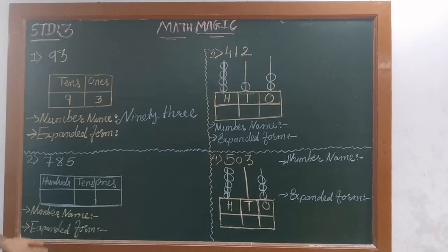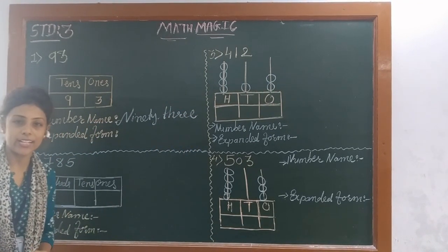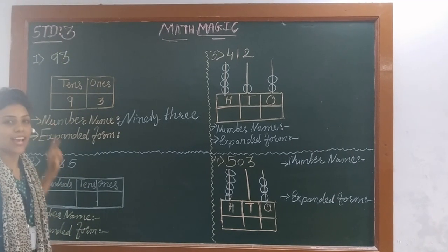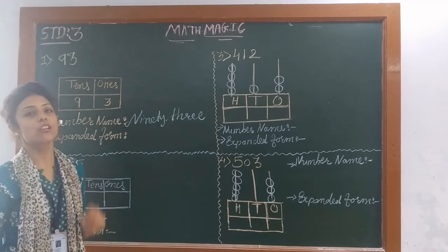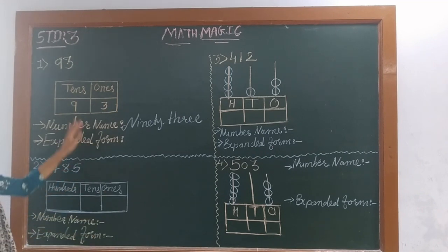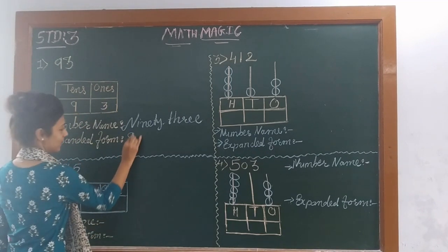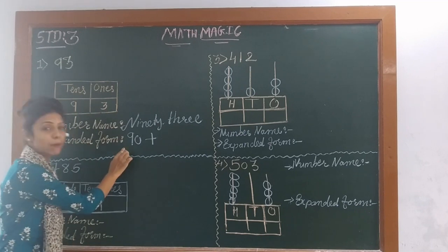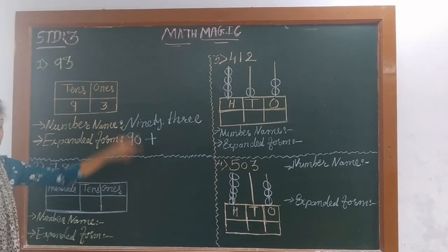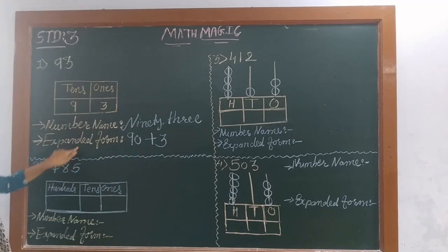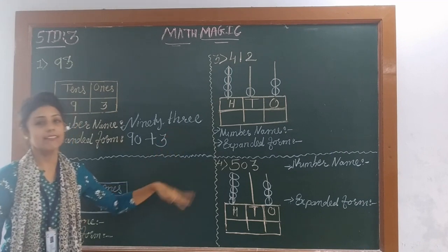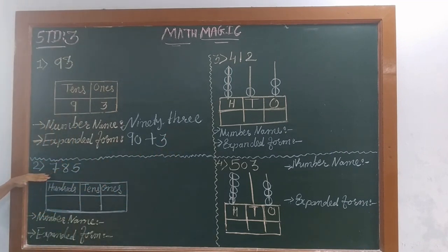Now place value — you already know very well how to write the place value. 9 is at 10's place, so we will multiply 9 by 10. So 9 tens are 90, and we will write plus in expanded form, and 3 is at 1's place, so 3 ones are 3. So the expanded form of 93 is 90 plus 3.